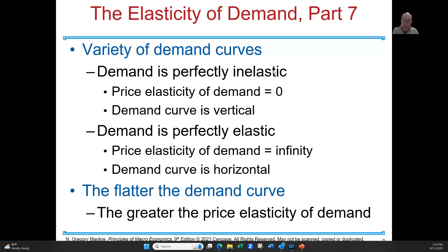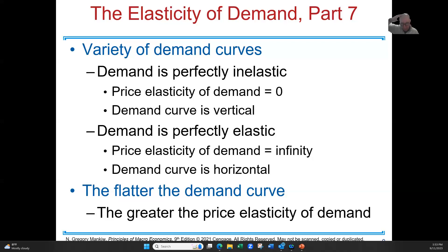When the demand is perfectly inelastic, it's equal to zero and has a vertical demand curve — straight up and down. For when elasticity is perfectly elastic, it's said to be infinite, and in that case it's going to be a horizontal line. Of course, the demand curve is supposed to slope. When it's flatter, there's a greater price elasticity of demand.